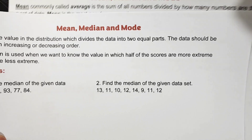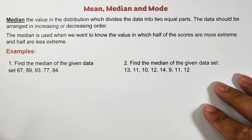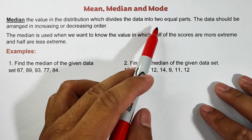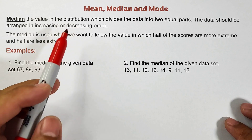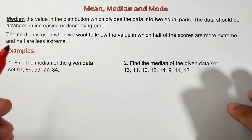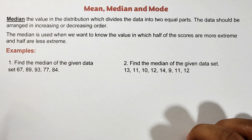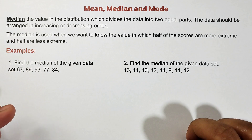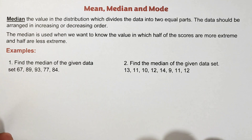The second measurement is the median. The median is the value in a distribution which divides the data into two equal parts. The data should be arranged in increasing or decreasing order. The median is the midpoint of a given dataset — that's why it divides the data into two equal parts. To find the median, the first thing you need to do is arrange the given dataset in decreasing or increasing order.